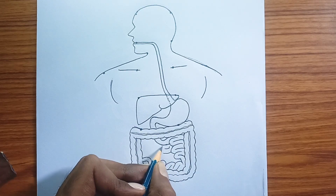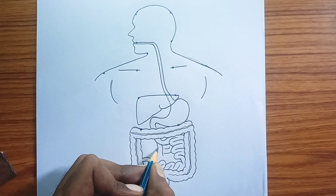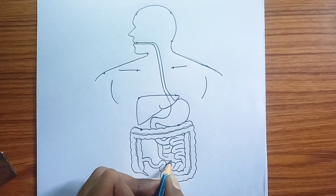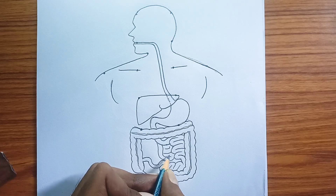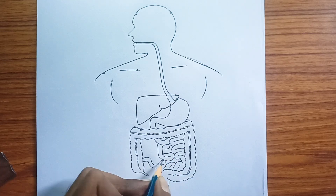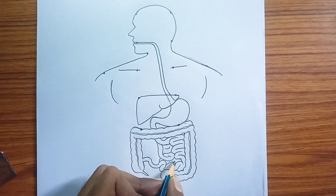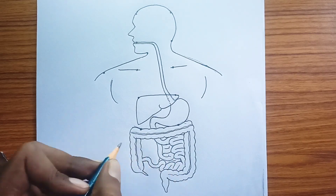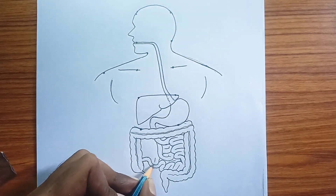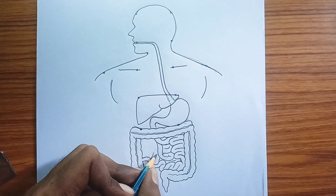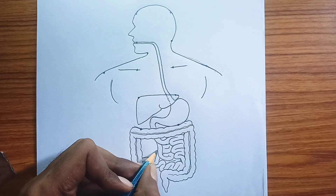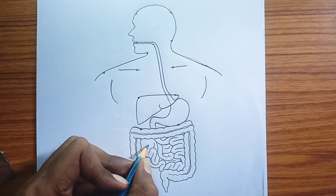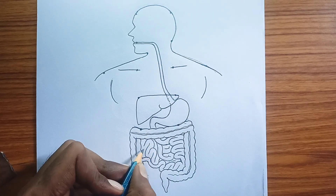Small intestine. A long, coiled tube where most chemical digestion and nutrient absorption occur. It's divided into three parts: the duodenum, jejunum, and ileum. Though not individually labeled, this entire structure is the small intestine.